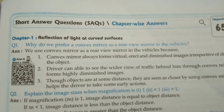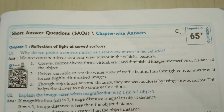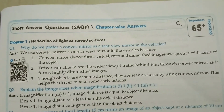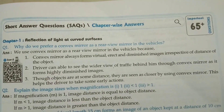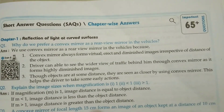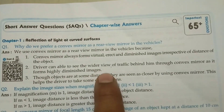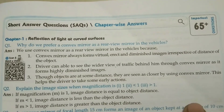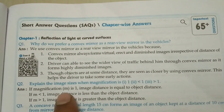One more important repeated question: Why do we prefer a convex mirror as a rear view mirror in vehicles? We use a convex mirror as a rear view mirror because it always forms a virtual, erect, and diminished image irrespective of the distance of the object. The driver can see a wider view of traffic behind through the convex mirror as it forms highly diminished images. Though objects are at some distance, they are seen as closer, helping the driver to take early action.